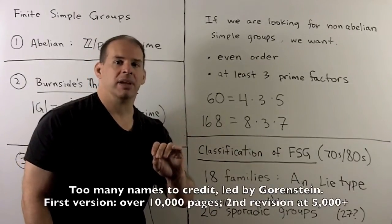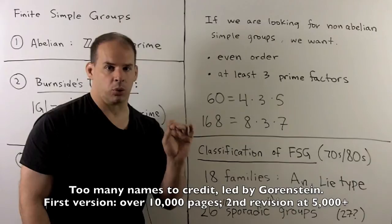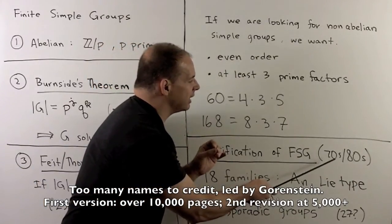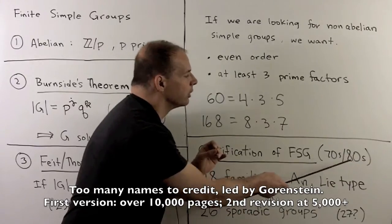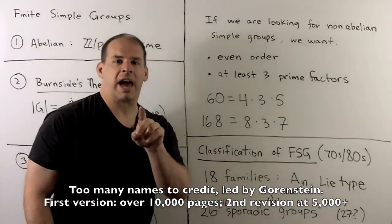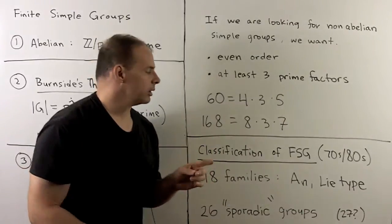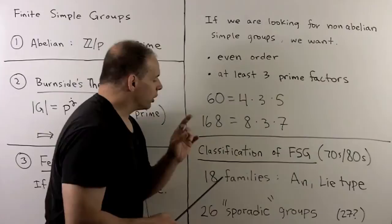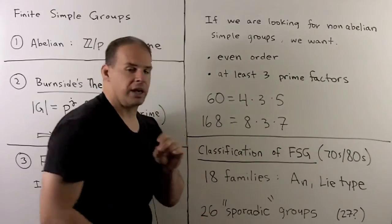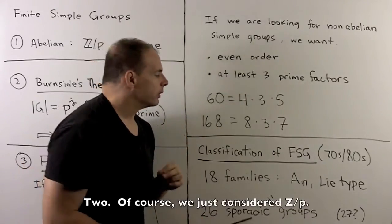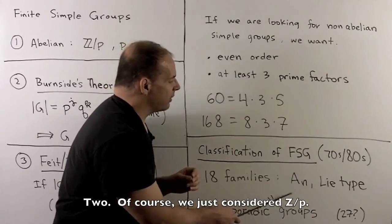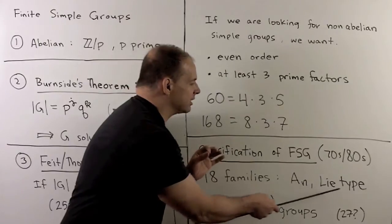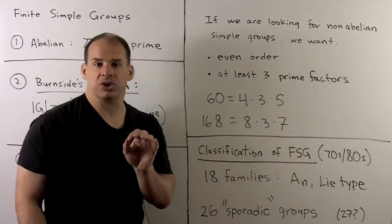Now, well beyond all this, the big program is classification of finite simple groups. So the major work on this culminated in the late 70s, early to mid 80s, with closing of a gap in the proof in the early 2000s. So end result here, there are going to be 18 families. So these are each countable. And we've seen one of them. So we saw A sub N, the alternating groups. Then the other families are going to be of Lie type, which just means they're associated to matrix groups.